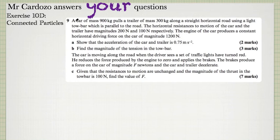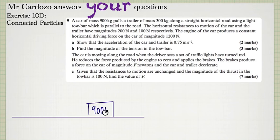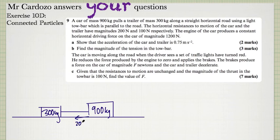A car of mass 900 kilograms pulls a trailer of 300 kilograms along a straight horizontal road. The tow bar is parallel to the road. The horizontal resistances to motion of the car and the trailer have magnitudes 200 newtons and 100 newtons respectively. The engine of the car produces a constant horizontal driving force of magnitude 1,200 newtons.